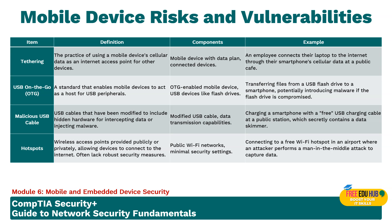Mobile device risks and vulnerabilities include tethering — the practice of using a mobile device's cellular data as an internet access point for other devices. The mobile device with the data plan acts as a host and other devices use its internet connection. For example, an employee connects their laptop to the internet through their smartphone's cellular data at a public café, or if traveling with a large data plan, you can enable tethering so everyone in your car can connect.